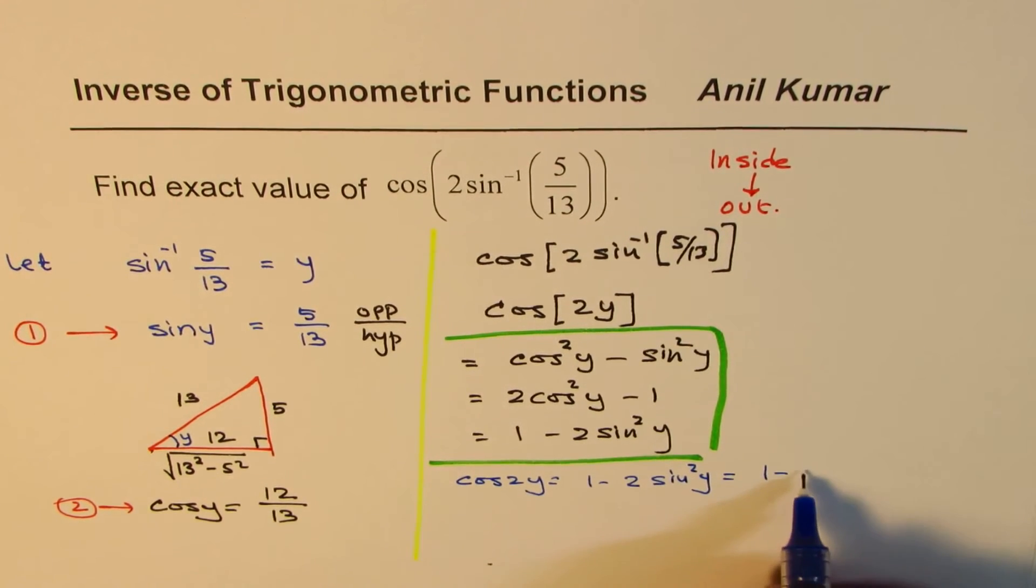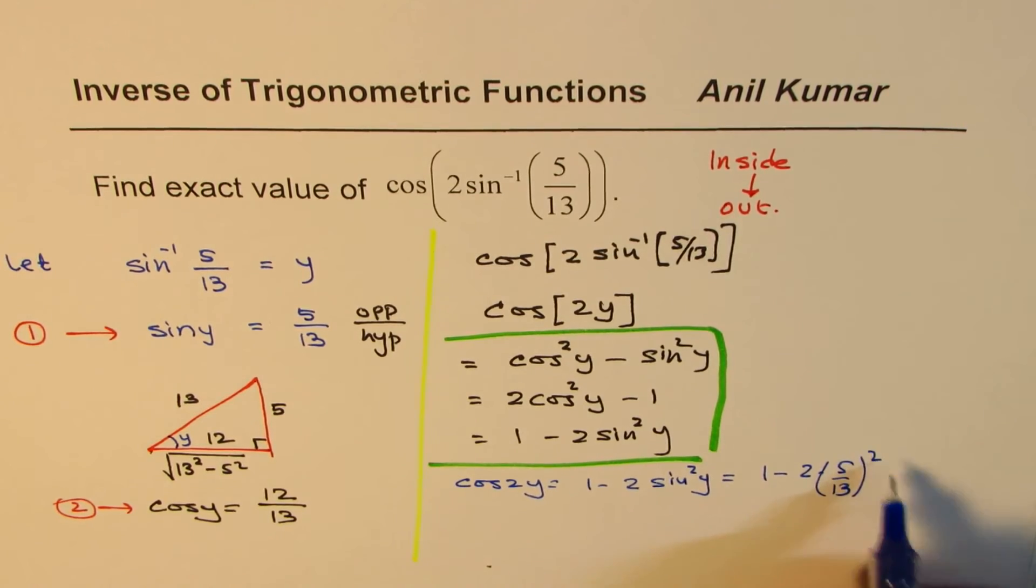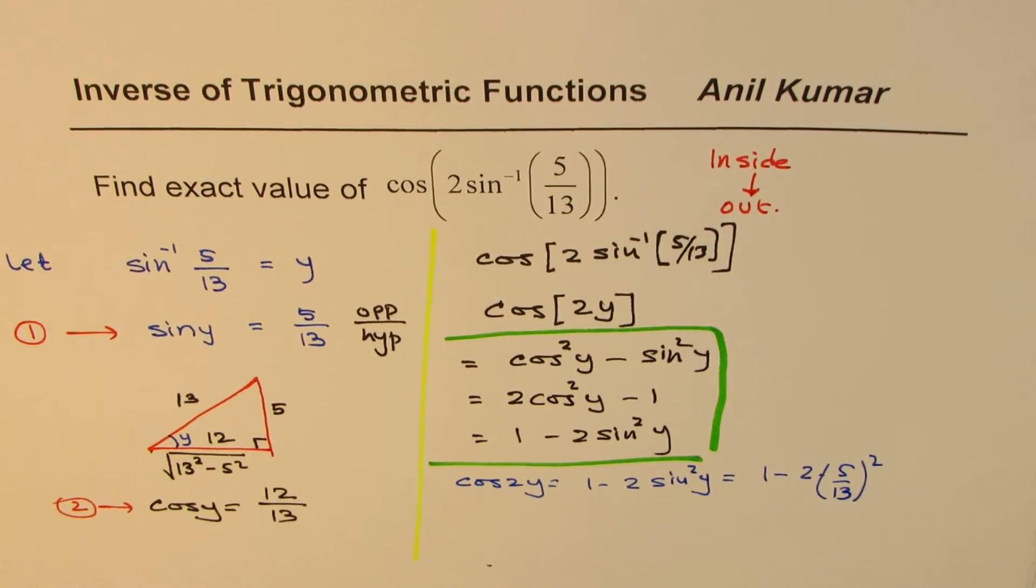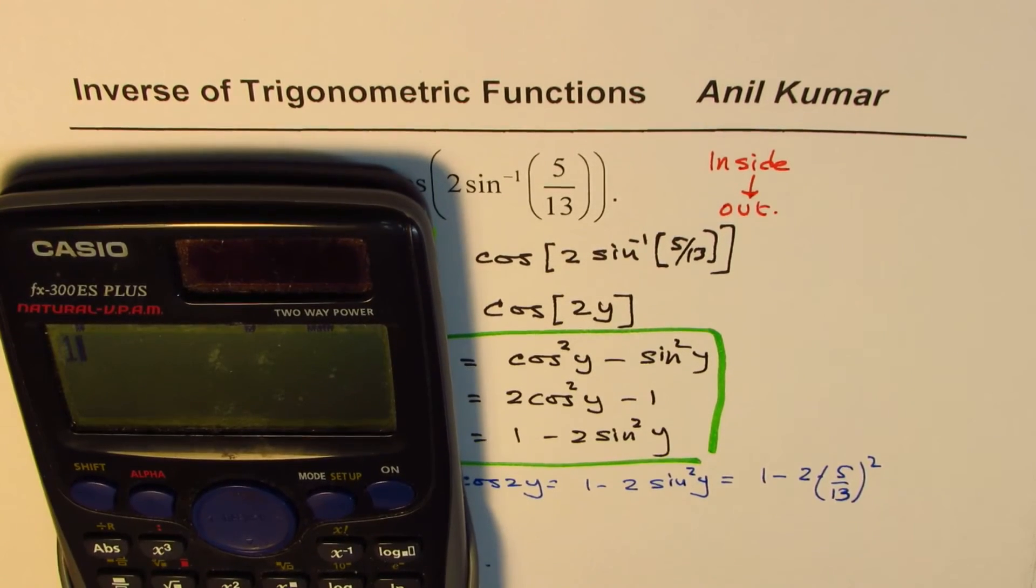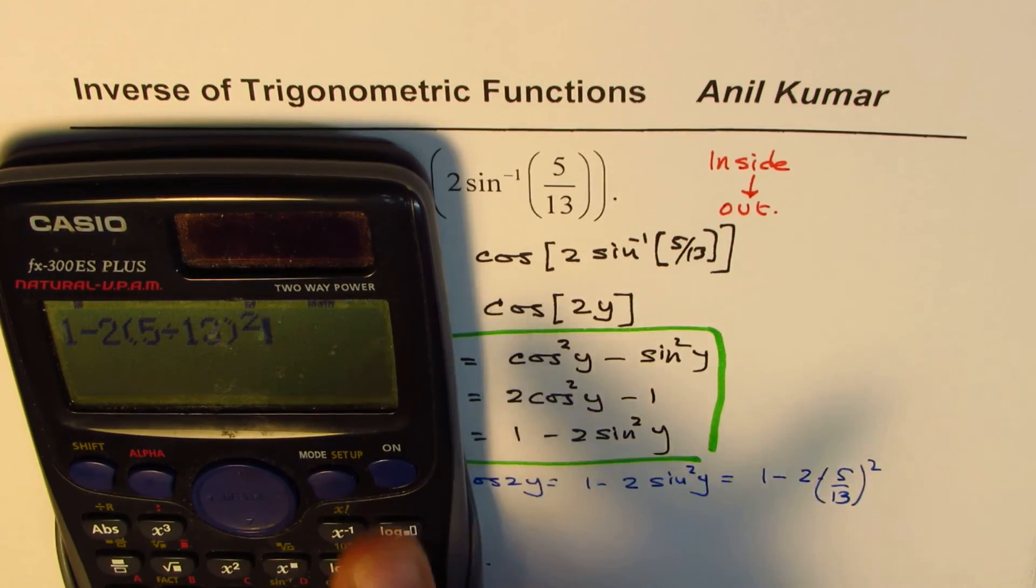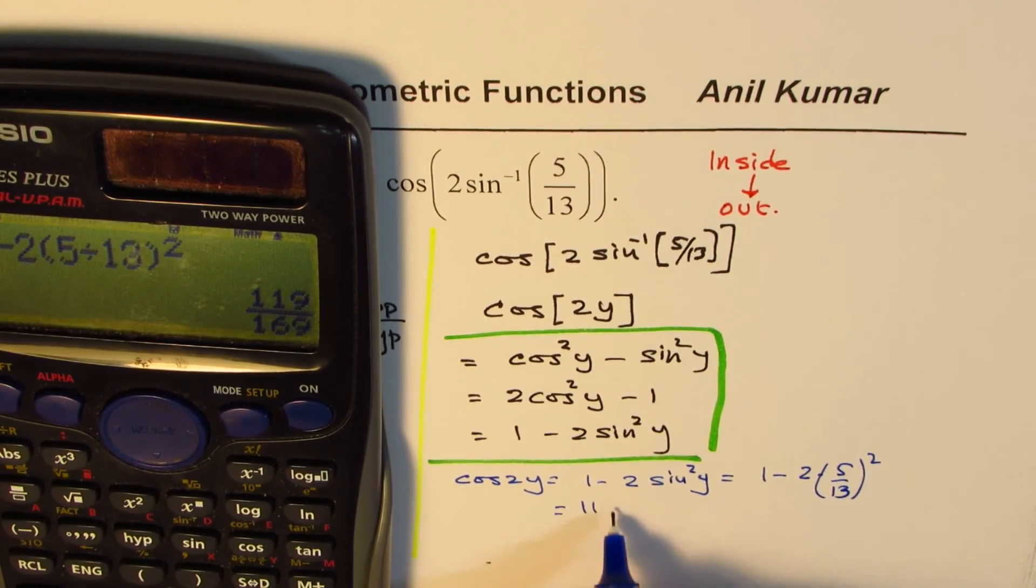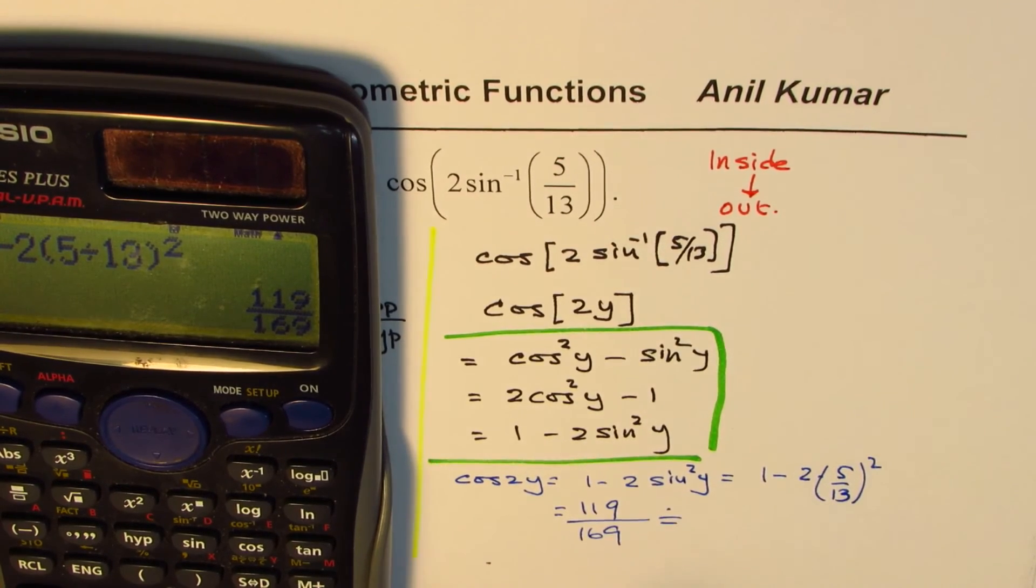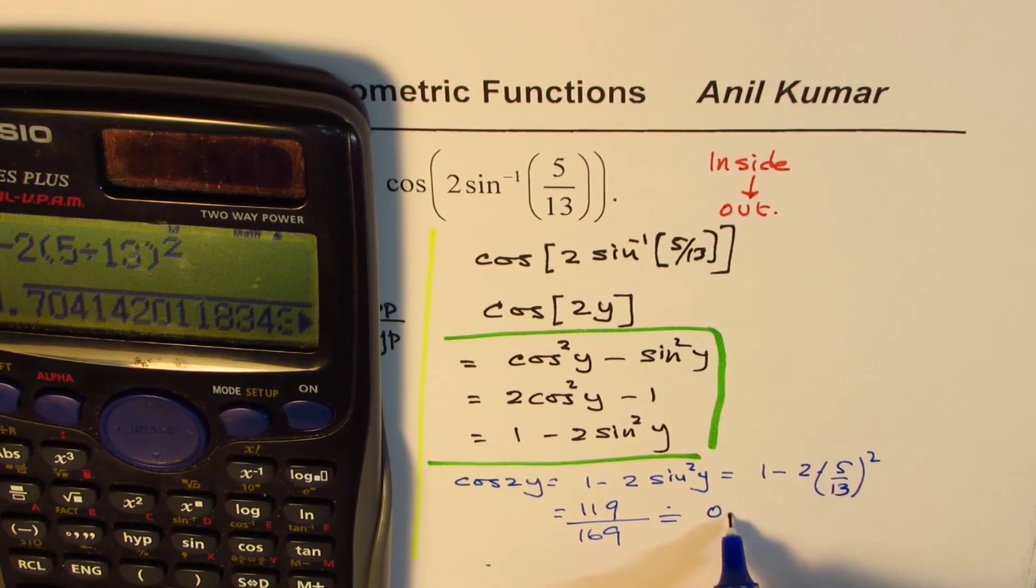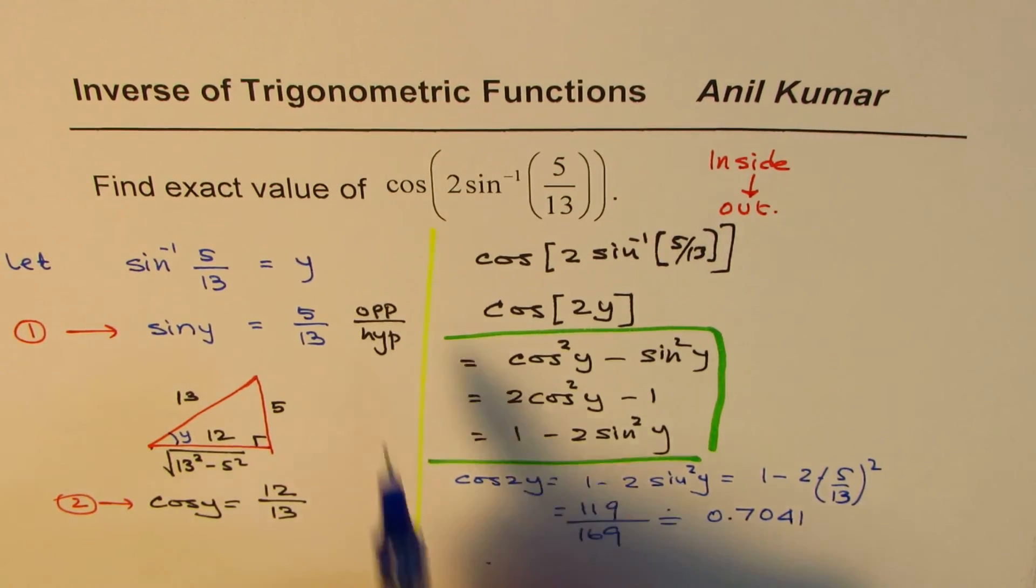And that is equal to 1 - 2 times sin²(y) means (5/13)². So that is what we have. Let's figure this out. So we have 1 - 2 times (5/13)². What we get here is the value which is 119/169, which could be approximated as 0.7041. So that is the value of this particular function. You can approximate this to 0.7.